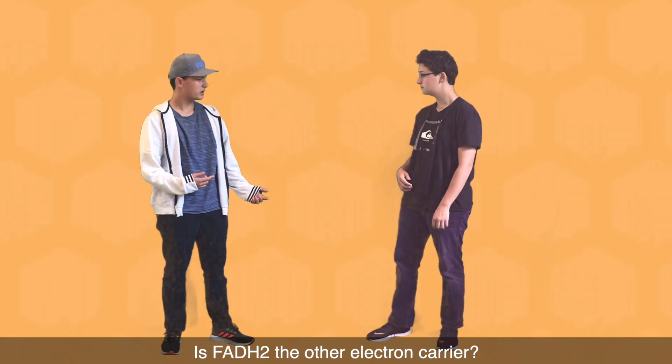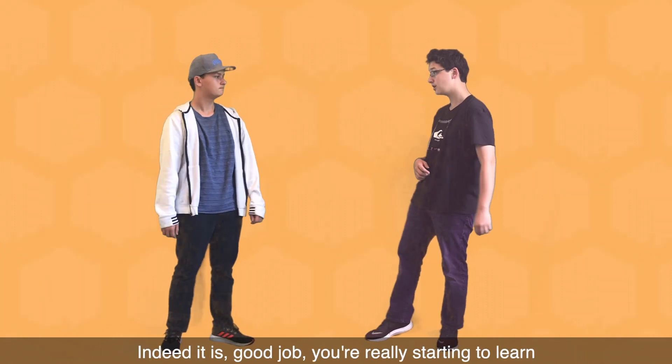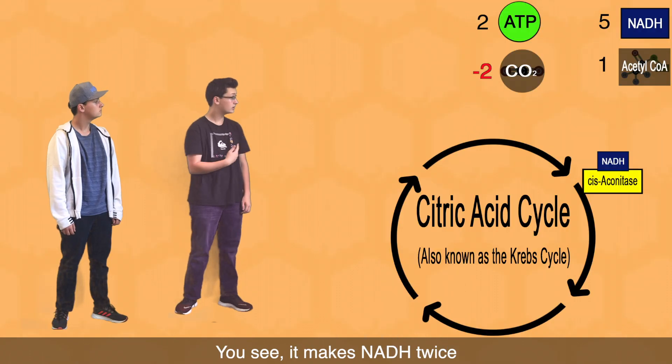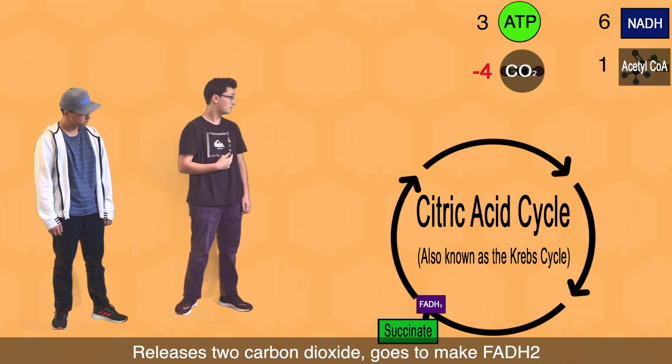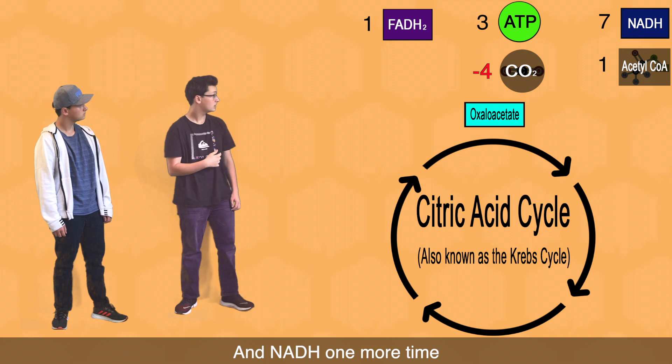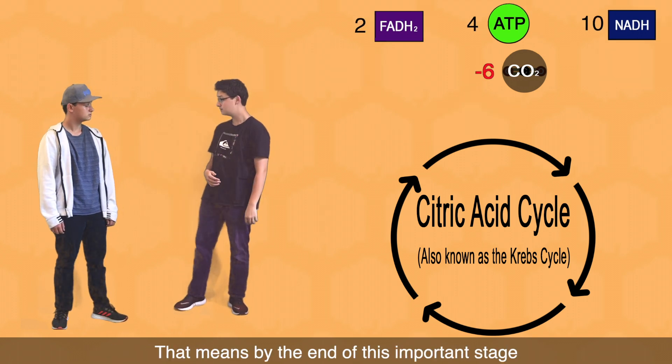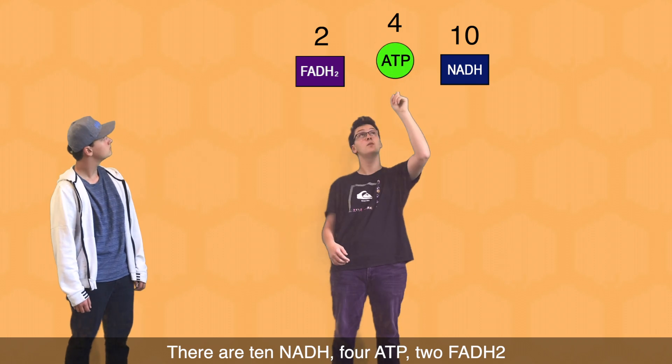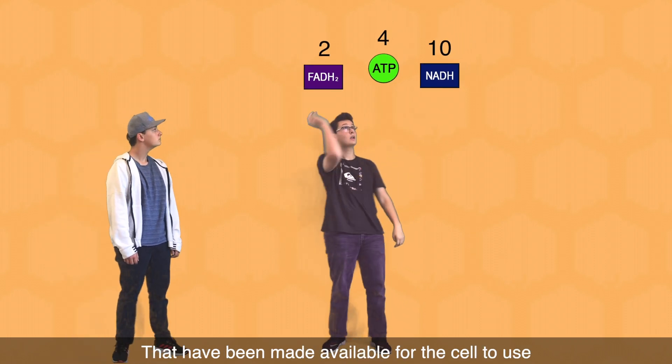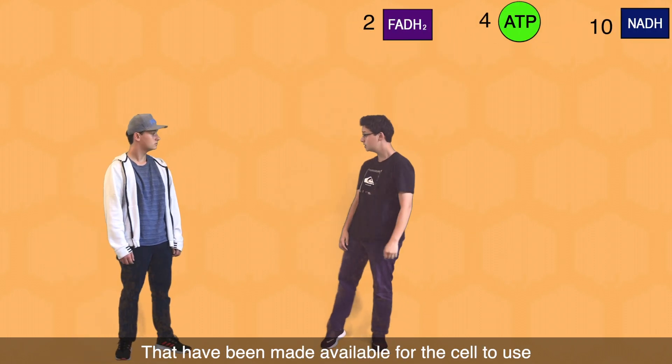Is FADH2 the other electron carrier? Indeed it is. Good job, you're really starting to learn. You see it makes an NADH twice. Releases two carbon dioxide, goes to make FADH2 and NADH one more time. One Acetyl-CoA remains that goes through the cycle again. That means by the end of this important stage there are 10 NADH, 4 ATP and 2 FADH2 that have been made available for the cell to use.